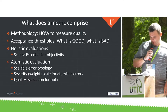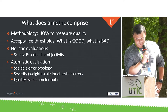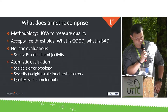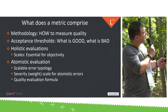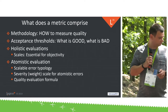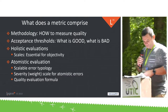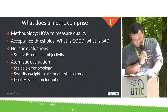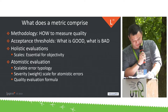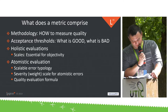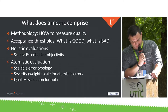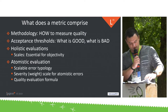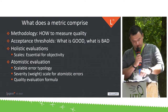What does the metric comprise? It comprises methodology — how you measure quality — and acceptance thresholds: what is good and what is bad. For holistic evaluation you have scales. For atomistic, you have a scalable error typology, severity or weight for atomistic errors, and quality evaluation formulas.